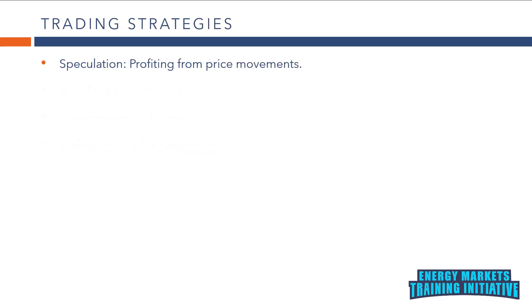Trading strategies. Speculation: traders buy and sell energy contracts with the aim of profiting from price movements. Speculators often use technical analysis, fundamental analysis, and market sentiment to inform their trading decisions. Hedging: participants use energy contracts to mitigate the risk of adverse price movements. Producers, consumers, and traders can hedge their exposure to energy price volatility by taking opposite positions in the futures market.